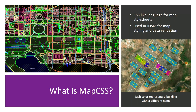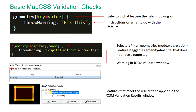To the right, you'll see we created a MapCSS style that would show buildings that have the same name and the same color. This helped us to identify potential relations that need to be made around buildings with the same name. Here are the basics for creating a MapCSS validation check. In the selector, you would specify the geometry of the feature you're looking for — node, way, relation, or star for all geometries — then attributes to look for. So in this case, features with the amenity equals hospital tag that don't have a name tag. Then in the body, you would write instructions for what to do with a feature — for example, throw a warning in the JOSM validator window that says 'hospital without a name tag.'